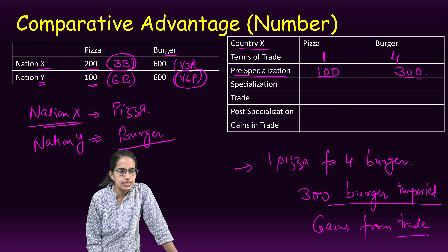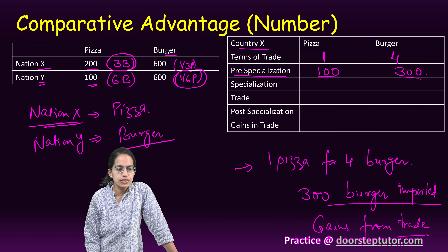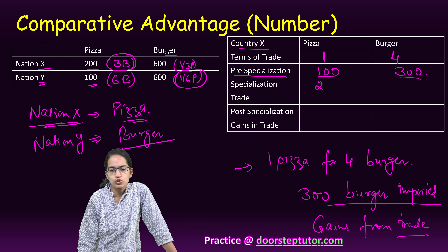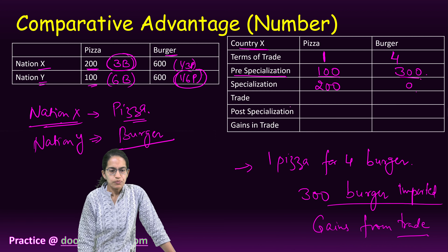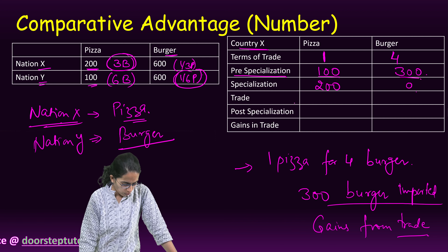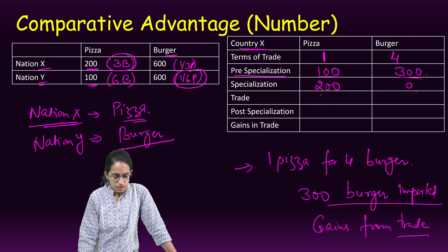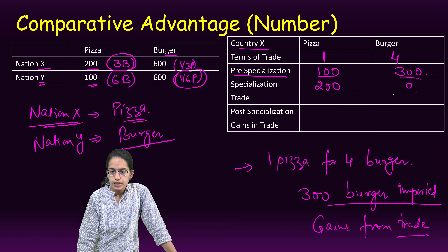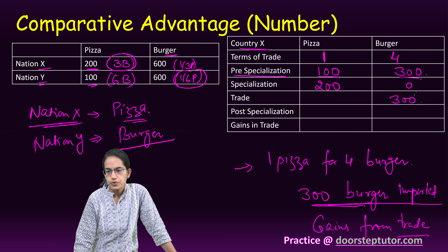The terms of trade is 1 pizza for 4 burgers — that's given. The pre-specialization output, before any trade, is country X producing 100 pizzas and 300 burgers. Now for the specialization: we know country X specializes in pizza, which means 200 pizzas and no burgers.